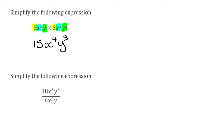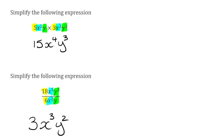For the next question, I've got 18x to the 5 y cubed divided by 6x squared y. Division this time, so we'll combine the numbers first: 18 divided by 6 is 3. We've then got x to the power of 5 divided by x to the power of 2. When we divide powers of the same base, we subtract the indices, so 5 take away 2 is 3 — that's x to the power of 3. And then y cubed divided by y: 3 take away 1 is 2, so we get y squared.